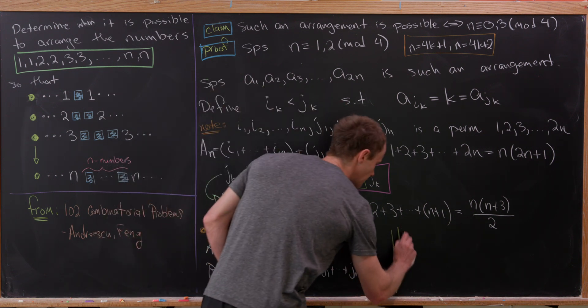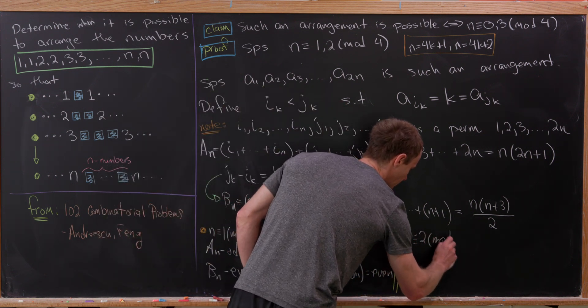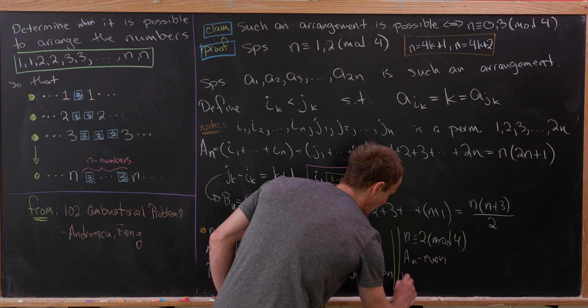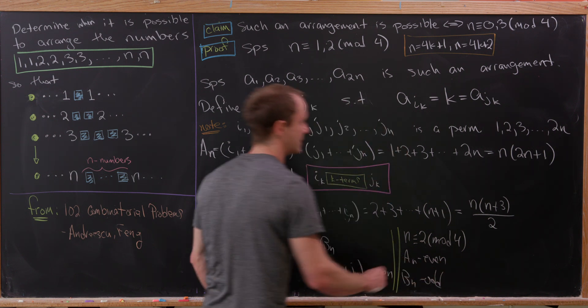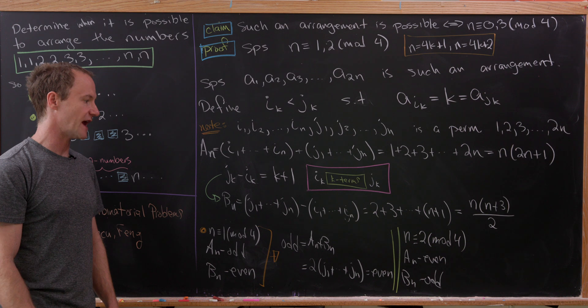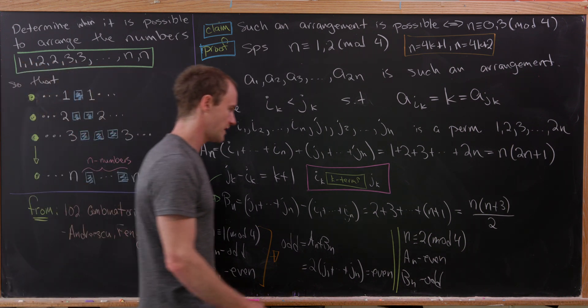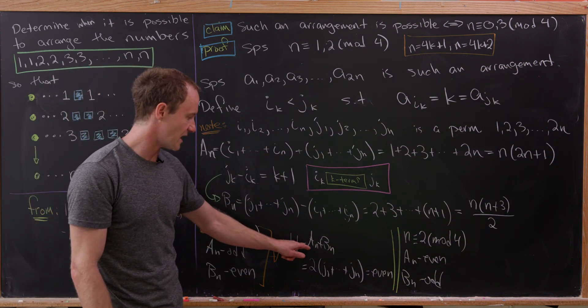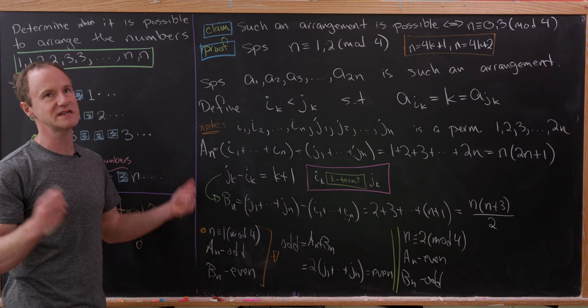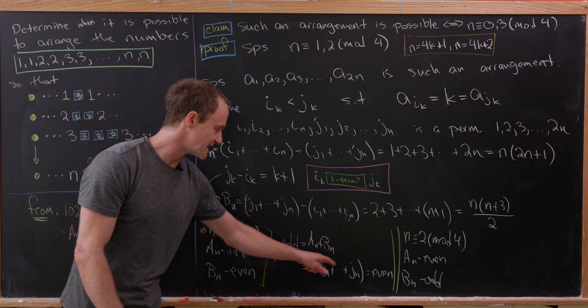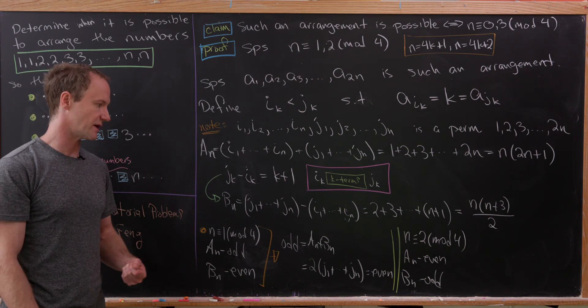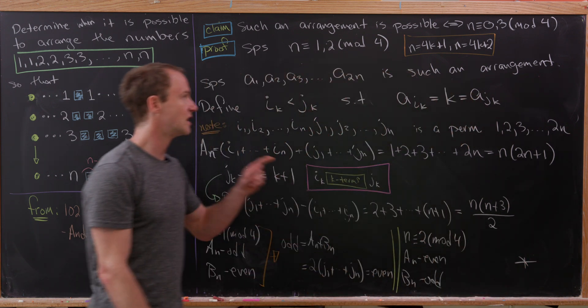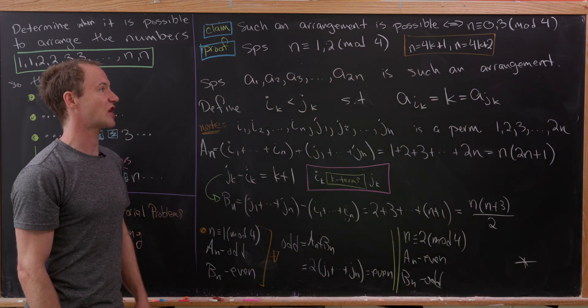Now let's look at the other case. If N is congruent to 2 mod 4, in other words, it's of the form 4k plus 2, we see that A sub N is even and B sub N is odd based off the formulas. But then we get the same sort of contradiction. It's just that instead of A_N and B_N being odd and even, they're even and odd. But when we take their sum, we still get an odd number. But that's equal to an even number by our previous argument. But of course, an odd number cannot be equal to an even number, which means in both of these cases, we reach a contradiction.